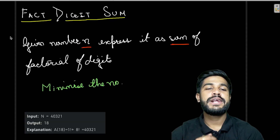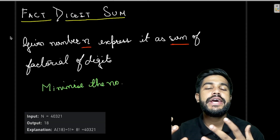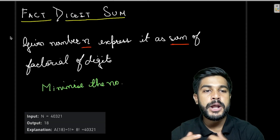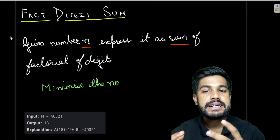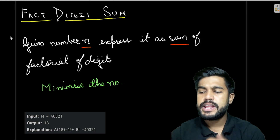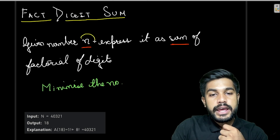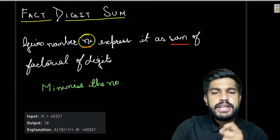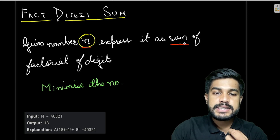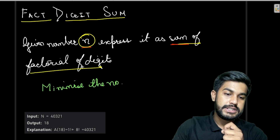Hi and welcome to Geeks for Games. Today we would be discussing the problem 'Factorial Digit Sum'. In this problem we are given a number N and we need to express it as a sum of factorials of digits.